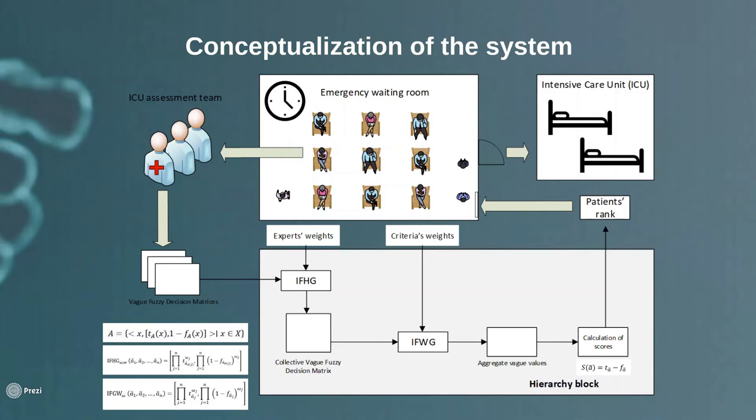We are going to obtain a vague passing decision matrix per expert, so we will have a group of vague passing decision matrices as we have different experts. Our idea here first is to combine these matrices using the IFHG operator with the help of expert weights in order to obtain the collective vague passing decision matrix.